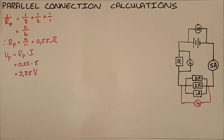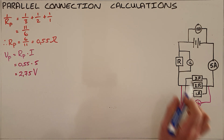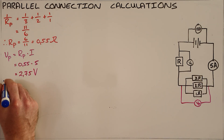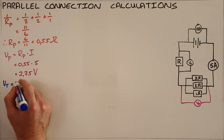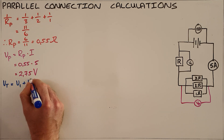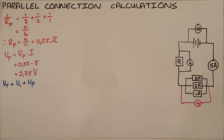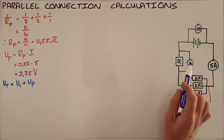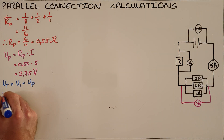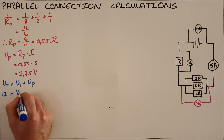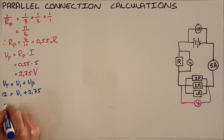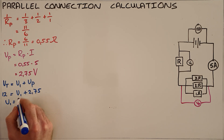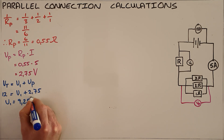Once we've done that, we can calculate the voltage measured by V1, because we know that the total voltage provided by the battery — 12 volts — must equal the sum of the two voltages used in the circuit. In this case that is V1 plus V parallel. So 12 volts equals V1 plus 2.75 volts, which allows us to solve to find that V1 must have a voltage of 9.25 volts.